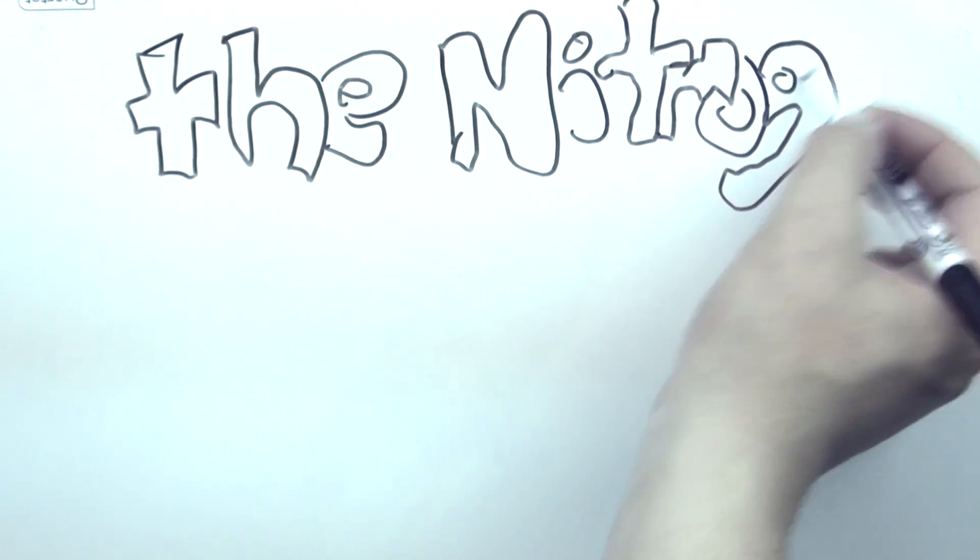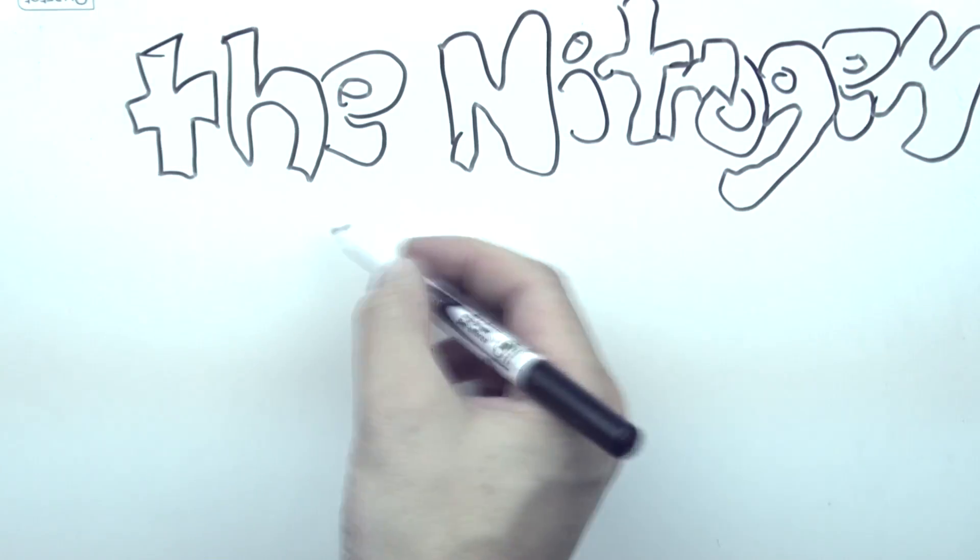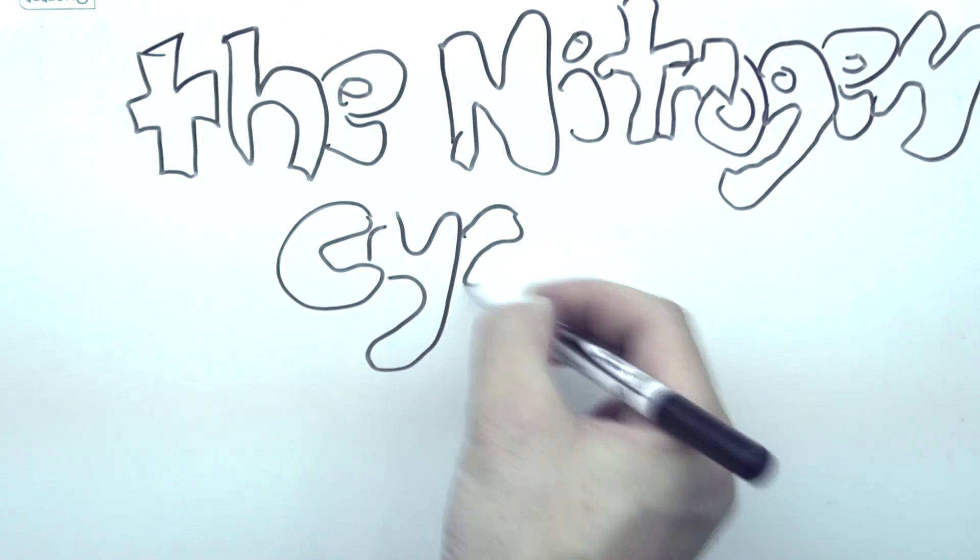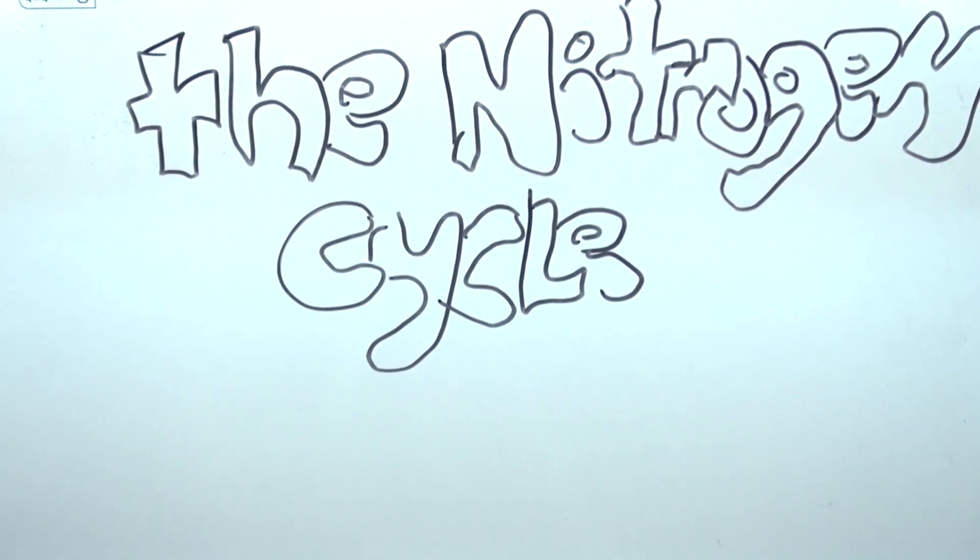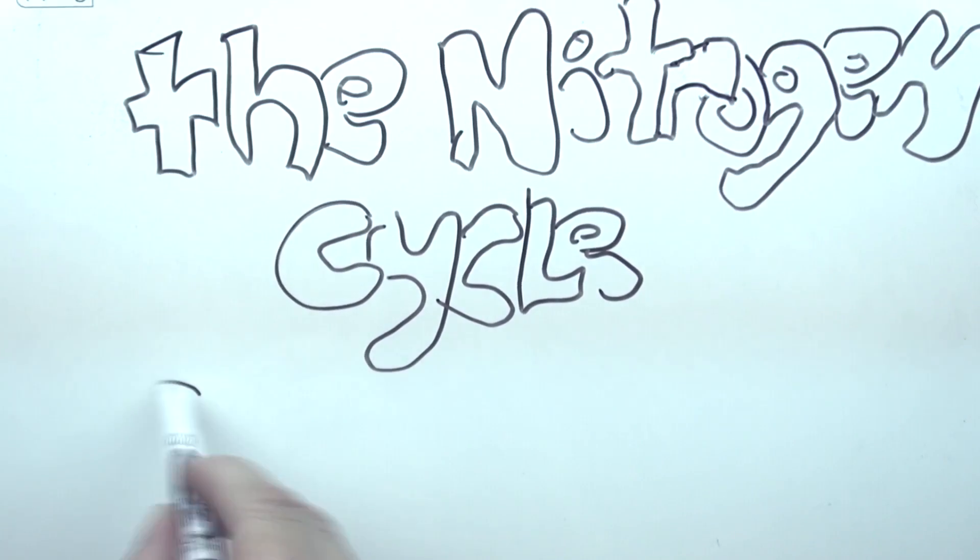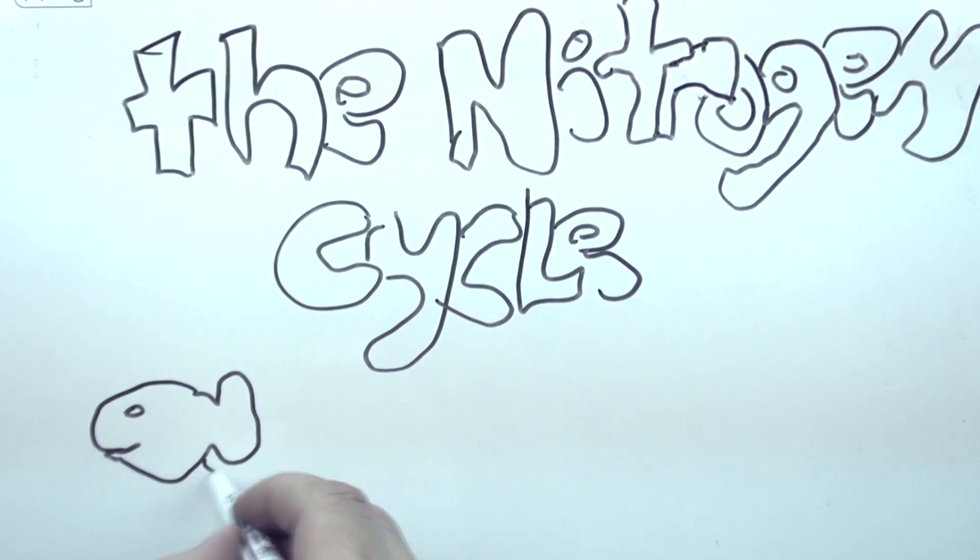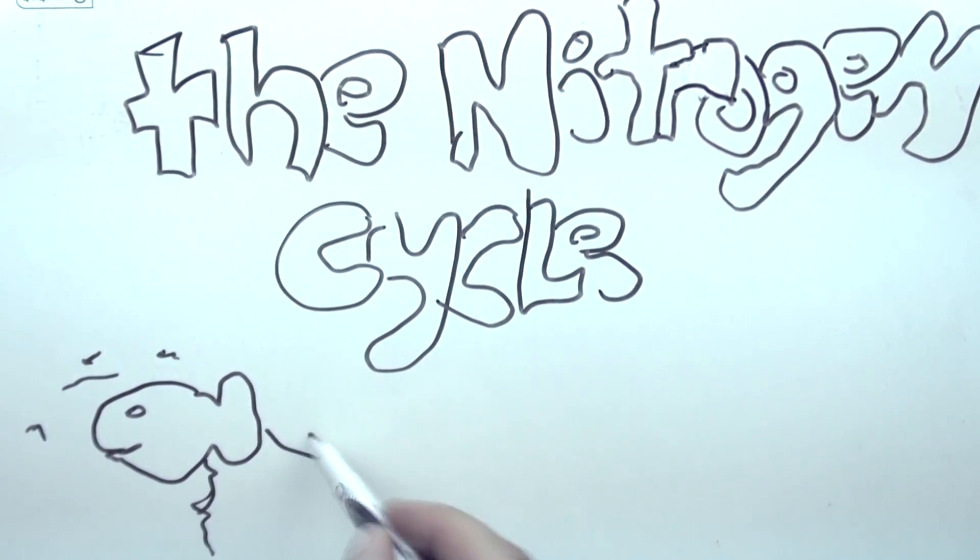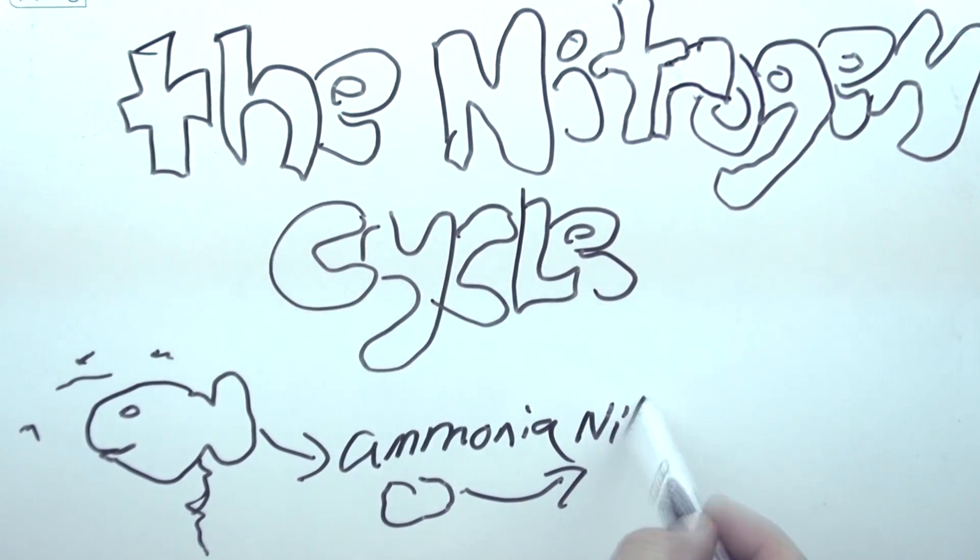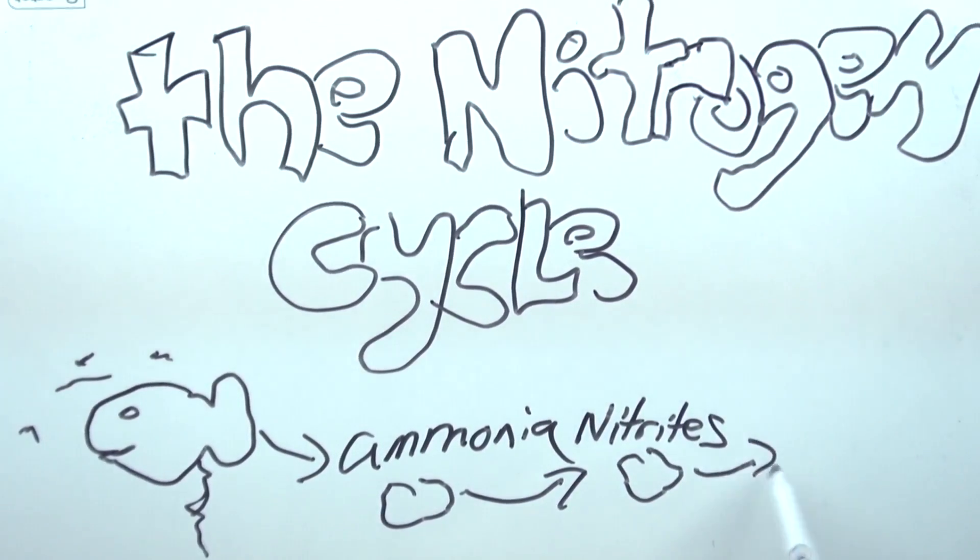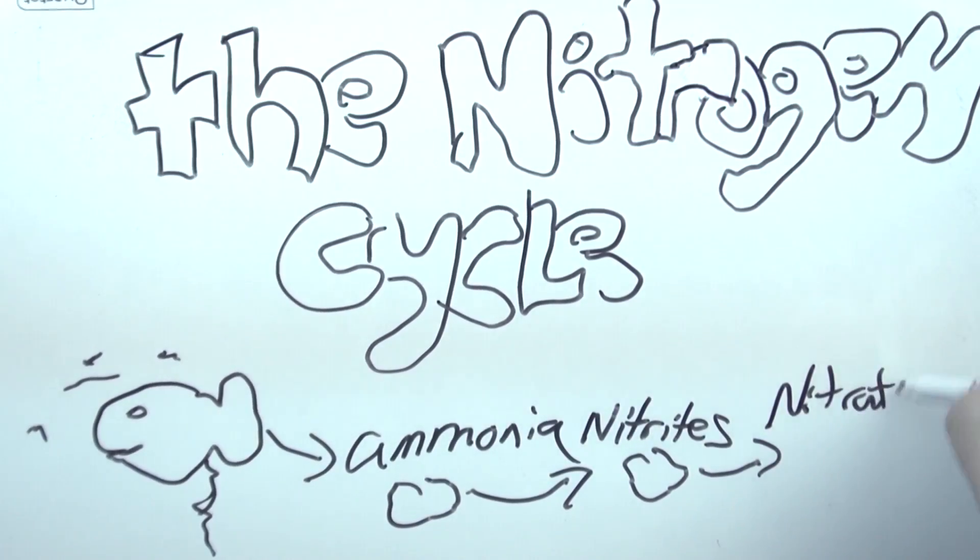The nitrogen cycle actually isn't very complicated, but it works a little like this: You have a fish, the fish eats its fish food and excretes some waste. That waste turns into ammonia. The ammonia then turns into nitrites, which are also very toxic, and then into nitrates, which are less toxic and basically the end of the cycle.